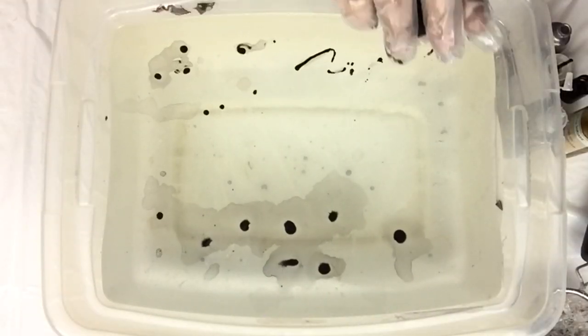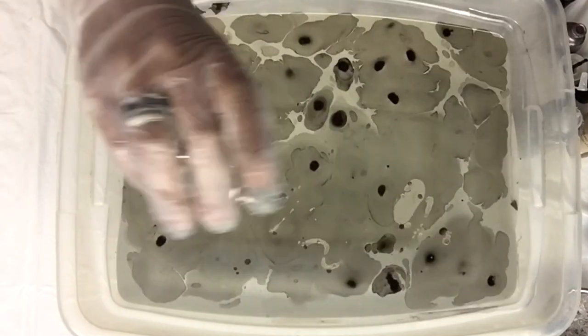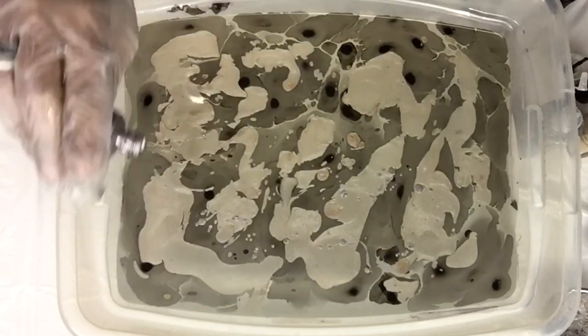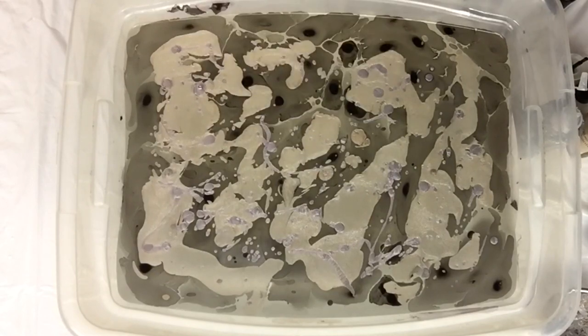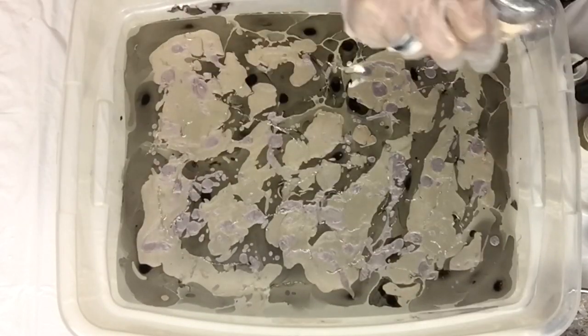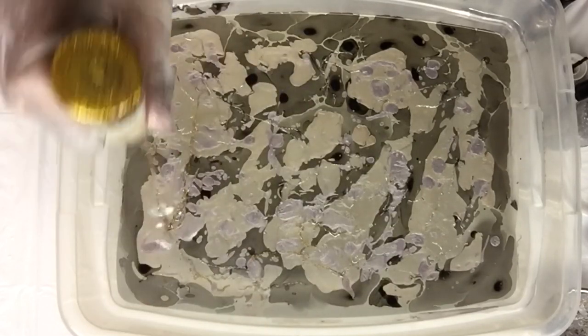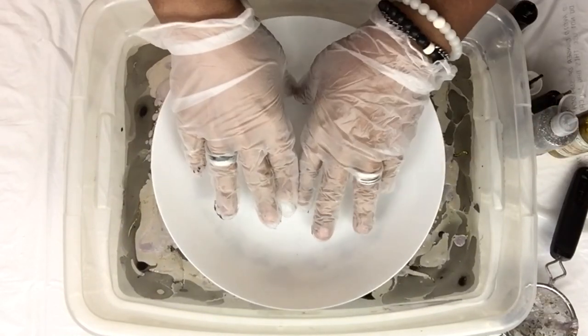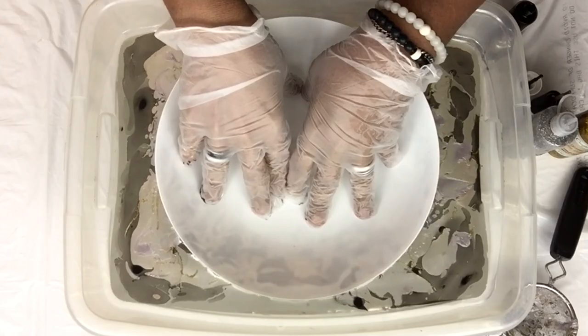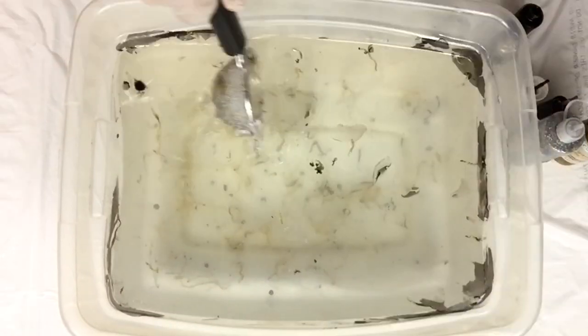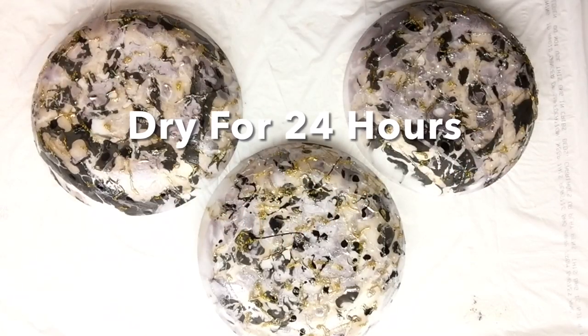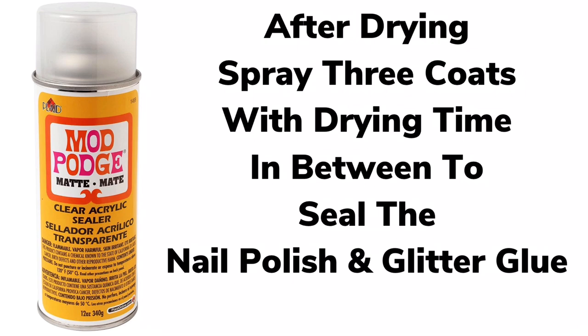I'll continue the same steps with all three nail polishes in no particular order. Keep in mind you may add as much nail polish as you like or less. Once I was done, I let all three dry for 24 hours. Once it was dry, I applied three coats of Mod Podge spray to seal it in.